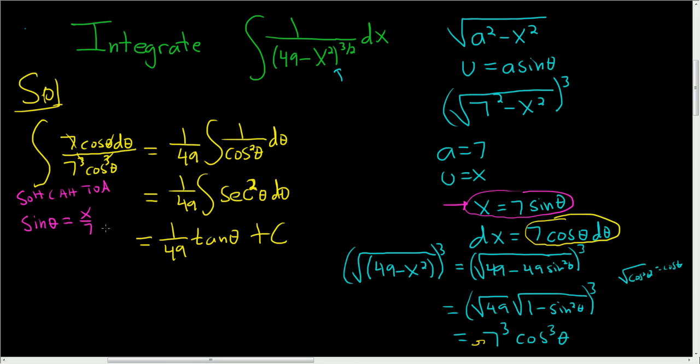we know this is opposite over hypotenuse. So now we can draw our triangle. Here's our theta. It's opposite, so the opposite here is x. And the hypotenuse is 7. And if you call this b,